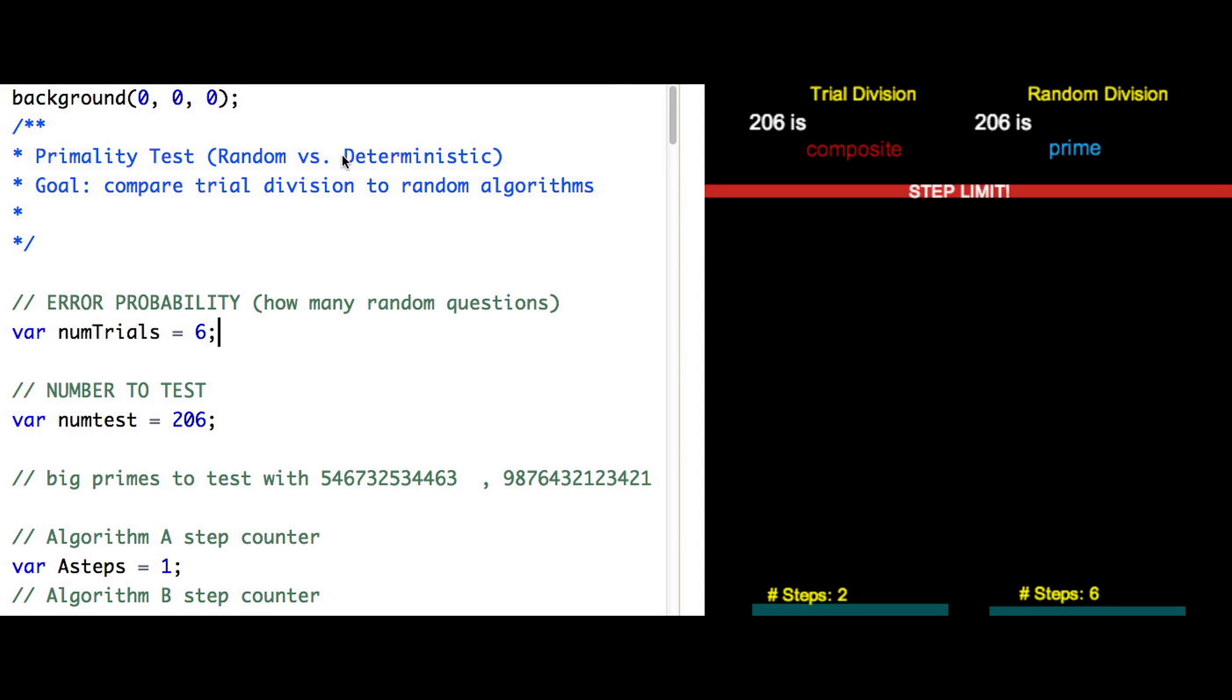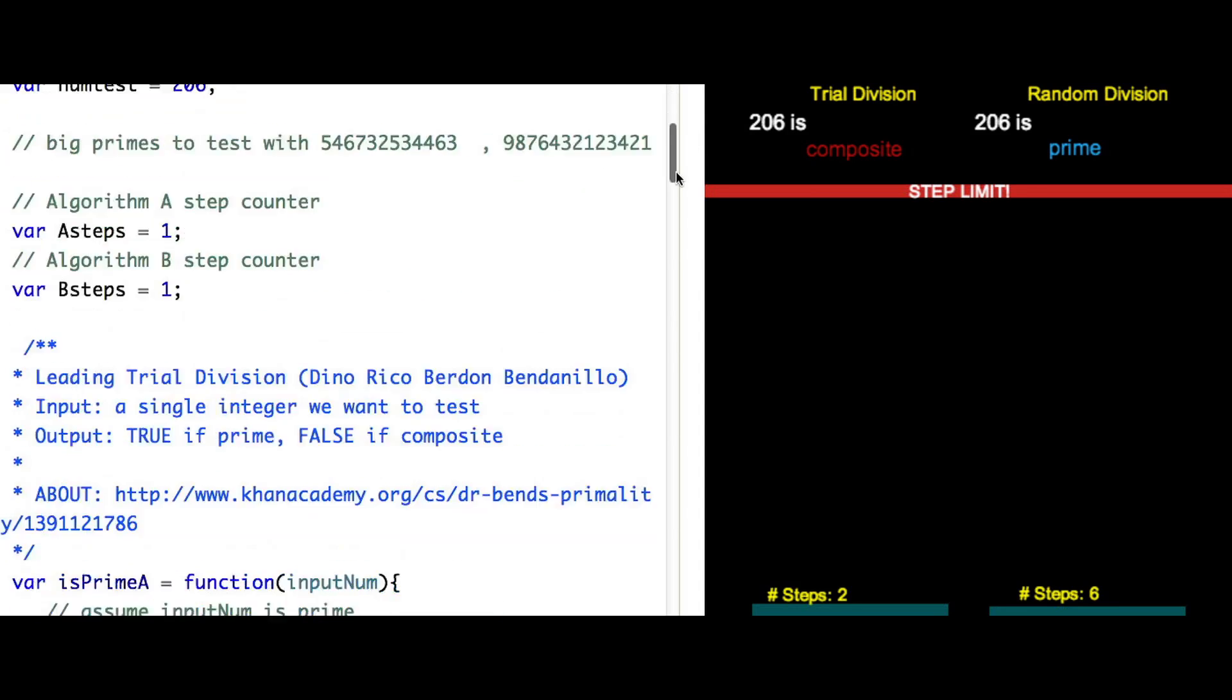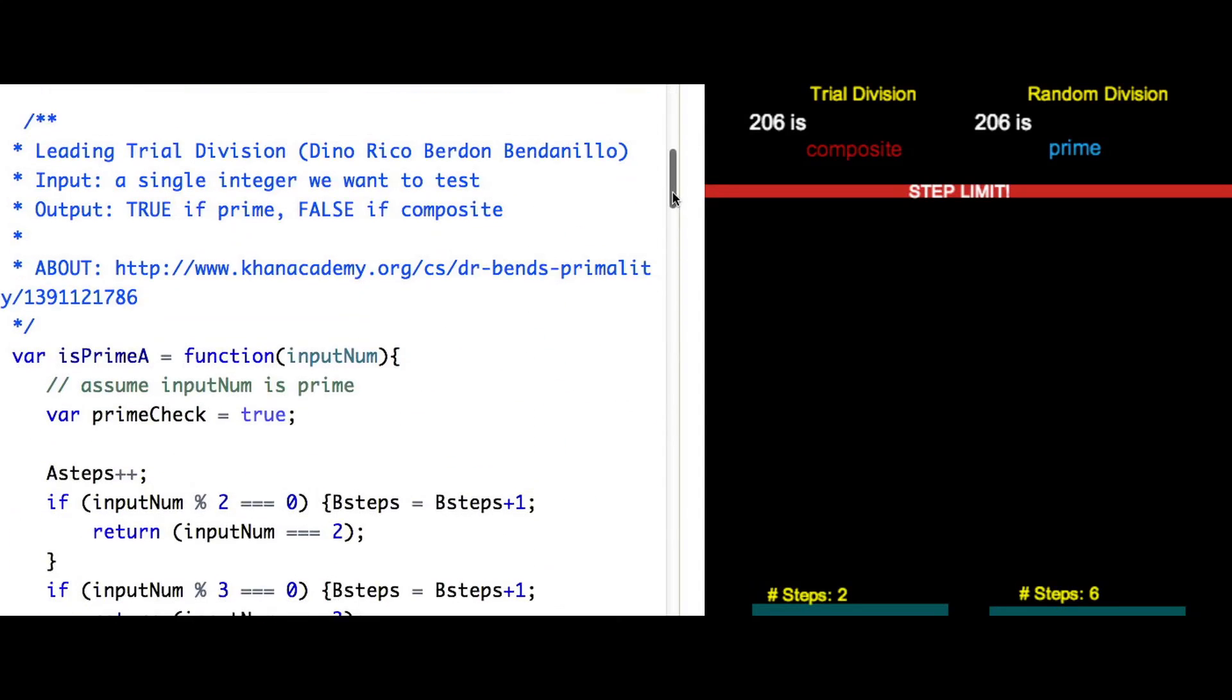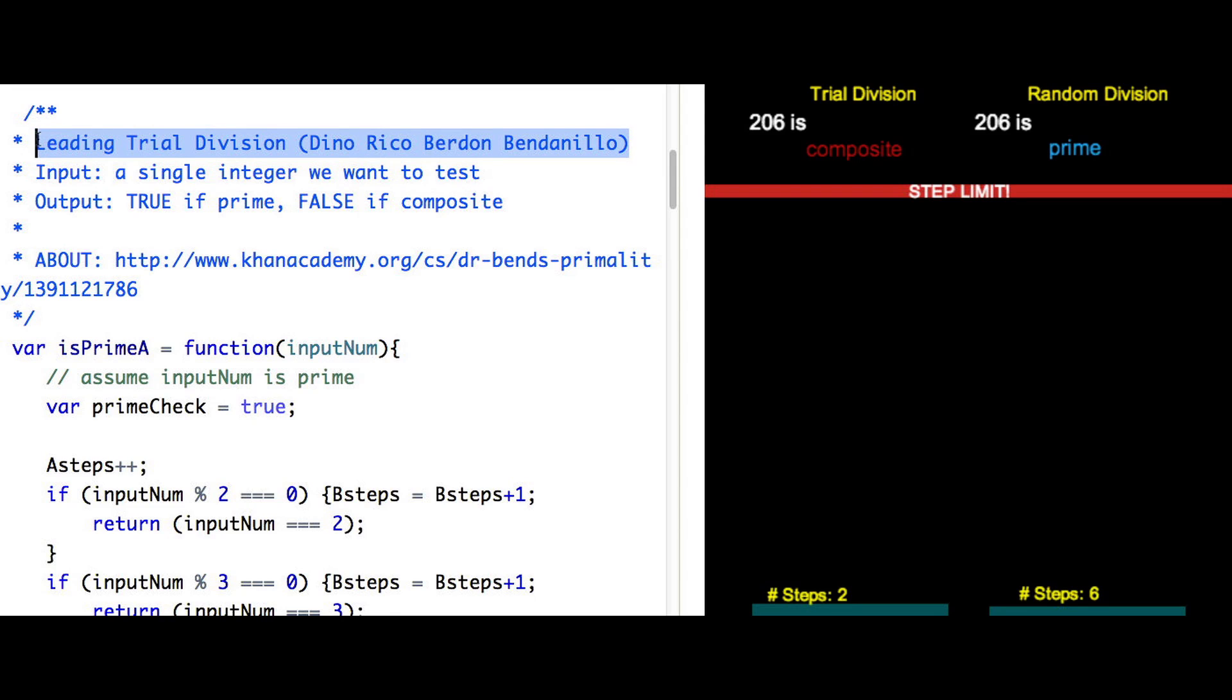So here is a program I've set up which compares our old trial division methods with this new random division test. I'm specifically using the current trial division speed leader, which is a program by Dino. I posted the link in the header of the program.